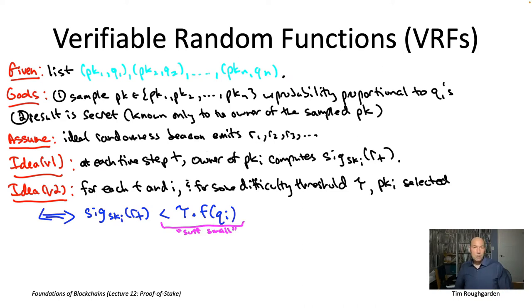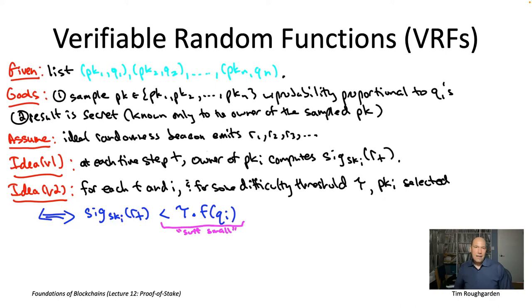Tau is the difficulty threshold, playing a similar role to the difficulty threshold in Nakamoto consensus proof of work. There we tuned tau according to how much hash rate was being provided to the protocol. Similarly here, tau is tuned according to the total amount of locked-up stake. The more locked-up stake, the smaller you want tau — analogous to how in Nakamoto consensus, more overall hash rate means a smaller tau. Back then it was to target a particular rate of block production; here we're targeting a particular rate of sampling of public keys.